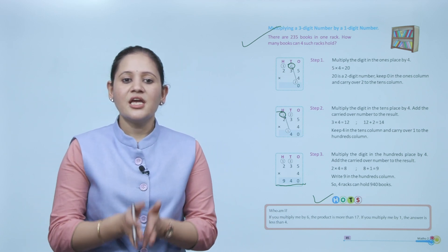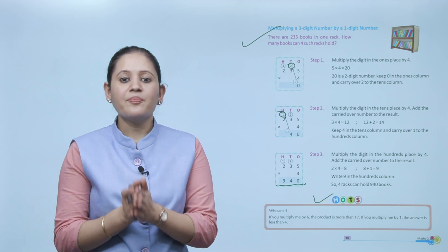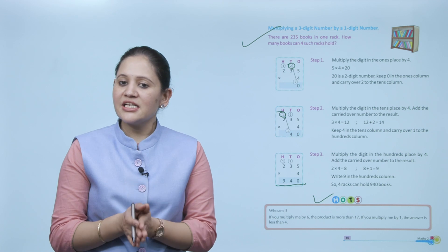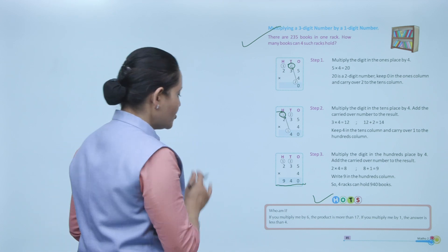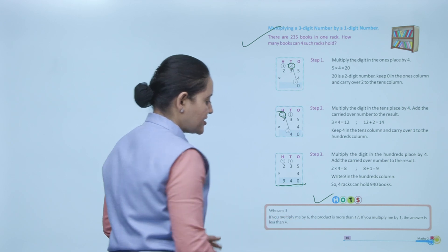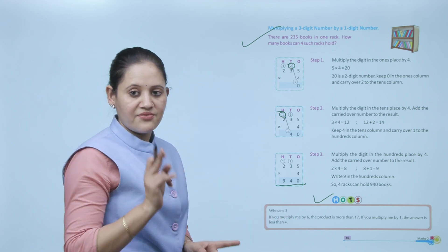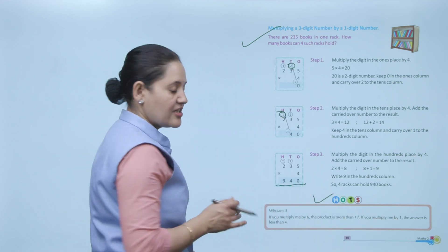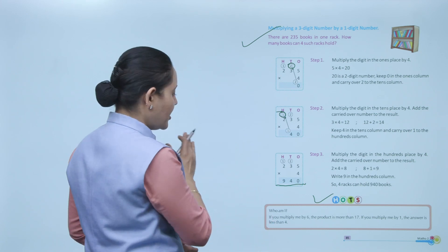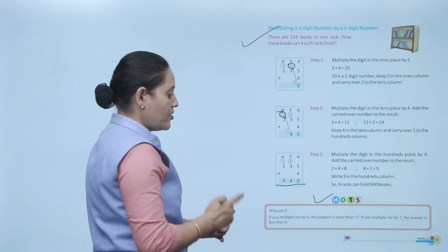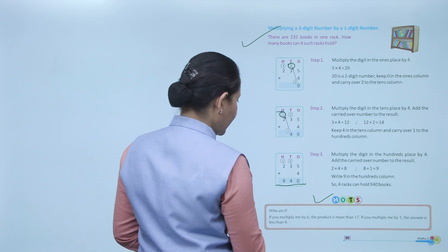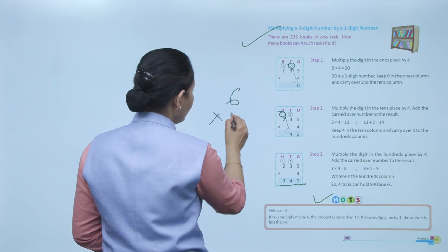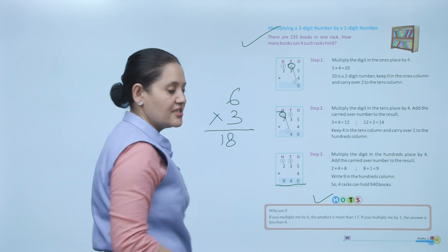What's next — a puzzle: Who am I? If you multiply me by 6, the product is more than 17. If you multiply me by 1, the answer is less than 4. The number could be 1, 2, or 3, but 6 into 3 equals 18, which is more than 17. So the answer is 3.